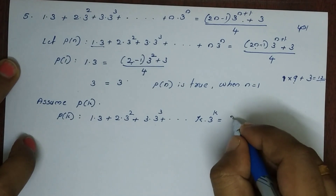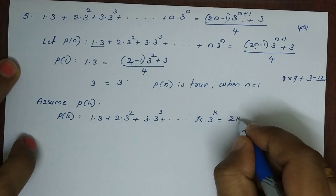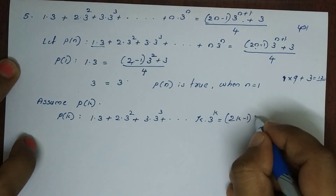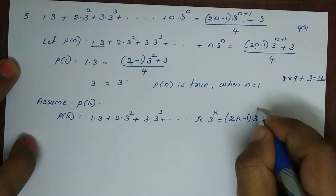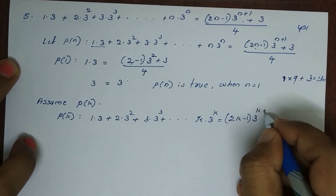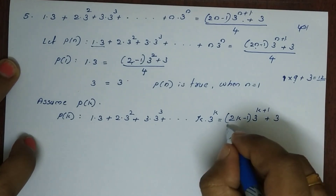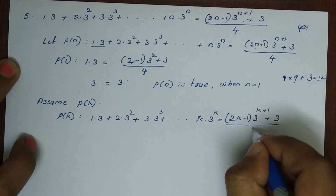Assume P of k is true: 1 into 3, plus 2 into 3 squared, plus 3 into 3 cubed, plus etc., plus k into 3 raise to k, is equal to 2k minus 1 into 3 raise to k plus 1, plus 3, the whole divided by 4.